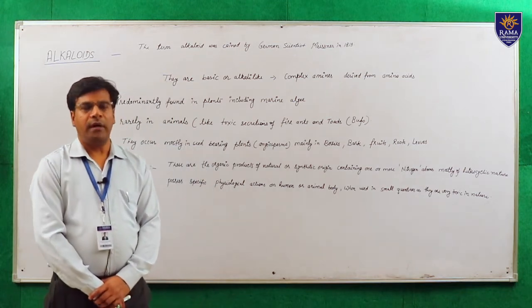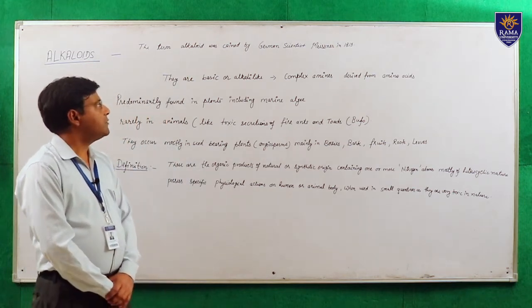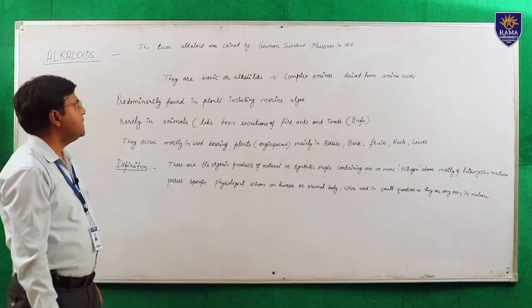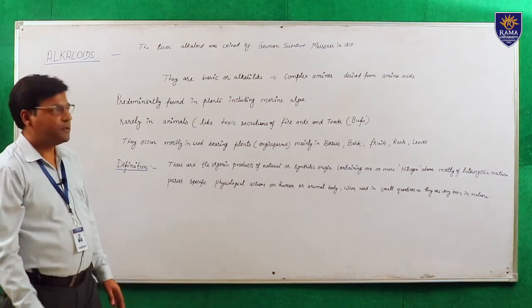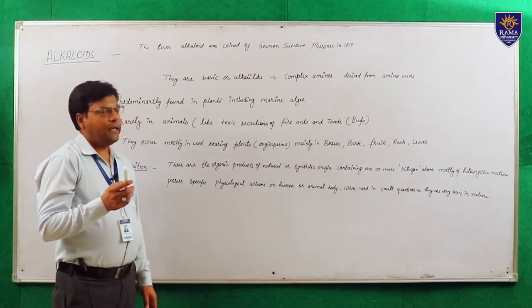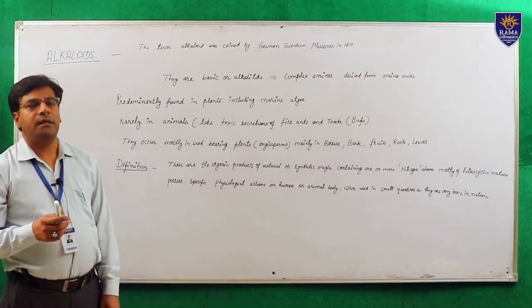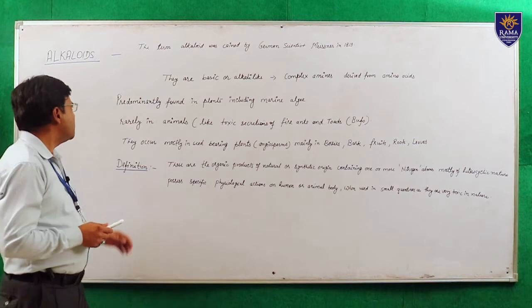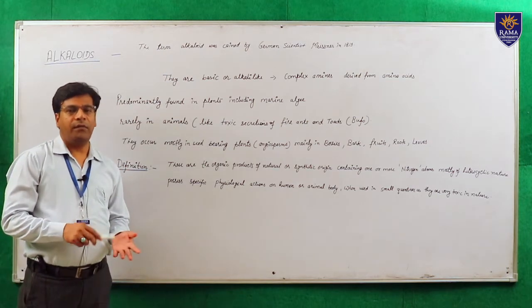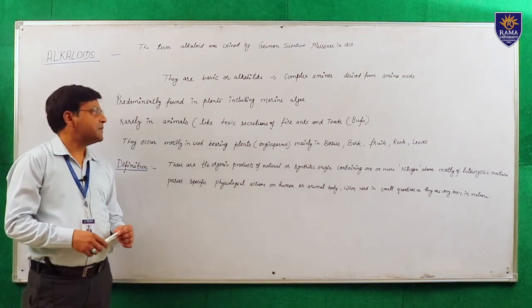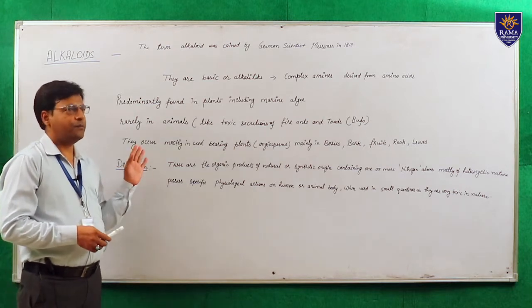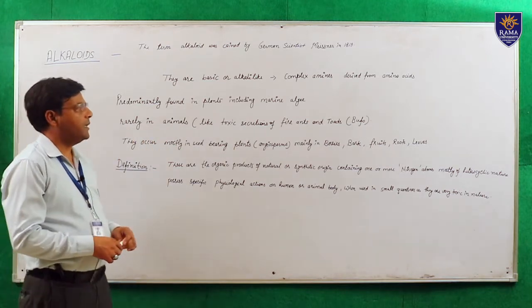So, what is alkaloid? The term alkaloid was coined by German scientist Meissner in 1819. The basic meaning of alkaloid is it is basic in nature, or you can say alkali-like substances, which are complex amines derived from amino acids. Predominantly these are found in plants and marine algae, and very rarely these are found in animals like fire ants and toads.